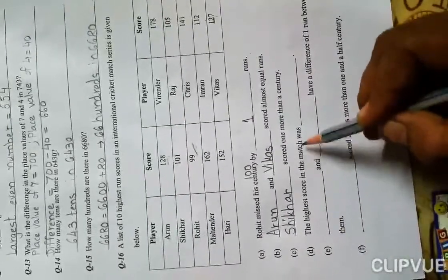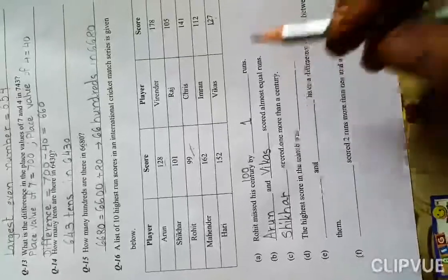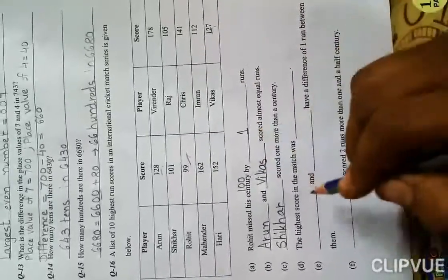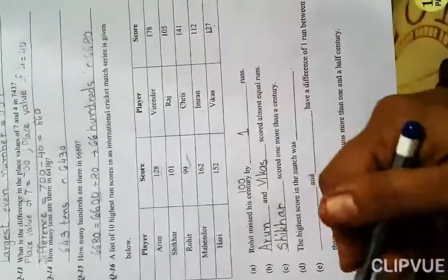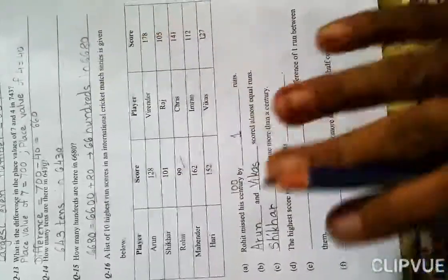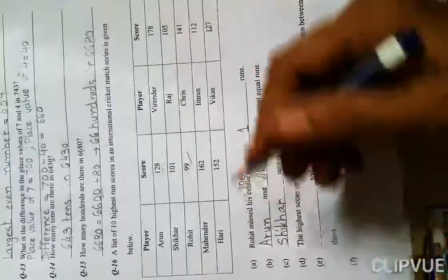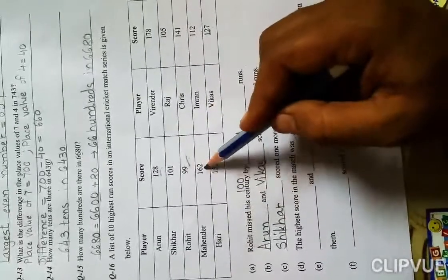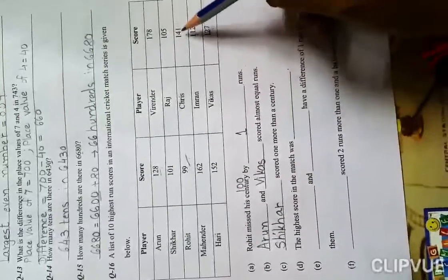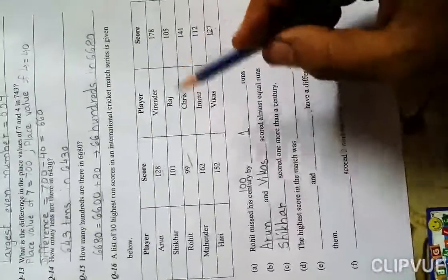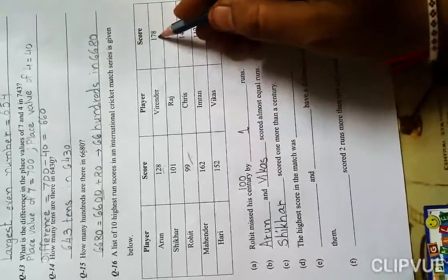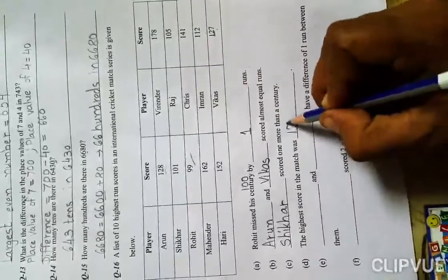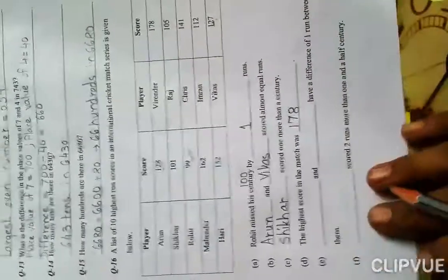The highest score in the match was blank. We don't write the name, we write the number. Which number is biggest? Look, hundreds place is same for all except 99 which is only two digits, so that's less. Now check tens place: 2, 0, 6, 5, 7, 0, 4, 1, 2. Among these, which is biggest? Seven. So 178 runs is the highest score.